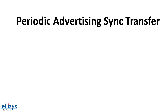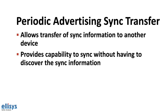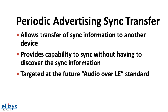We talked about the periodic advertising feature in previous videos. This is a mode that utilizes extended advertisements to allow a device to sync to another continuously advertising device and receive this data as it changes without having to establish a connection. In the first stage of this mode, the listening device needs to acquire the sync information to follow the advertising packets continuously. In version 5.1, a new feature allows a device that previously synced to an advertising device to transfer the sync information to a third device that also wants to sync to that advertising device.